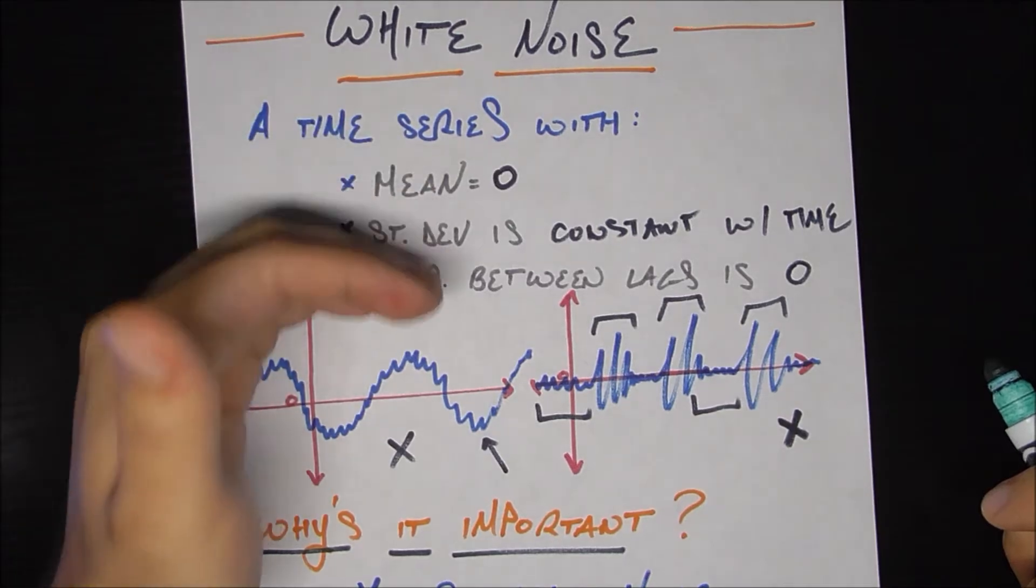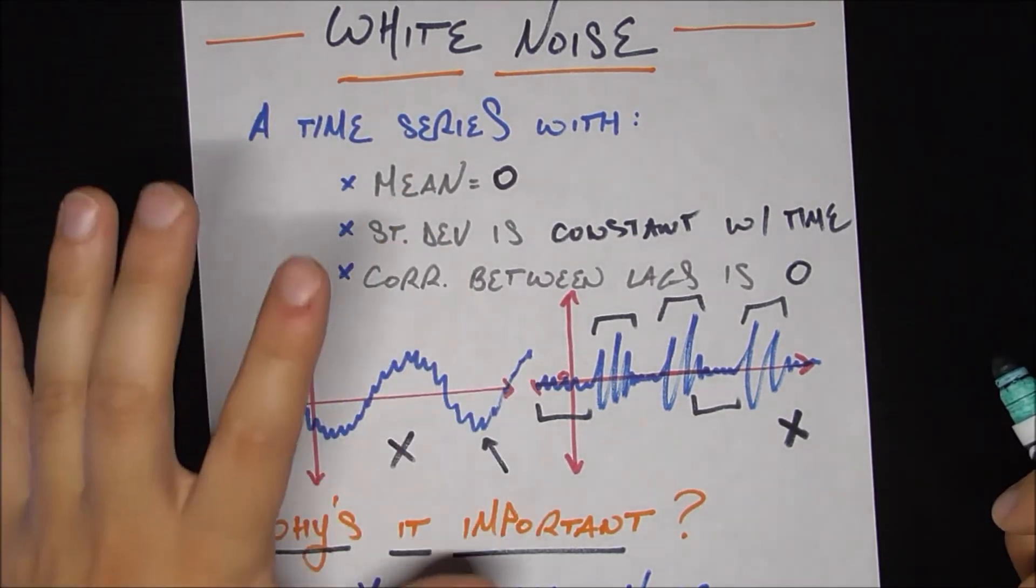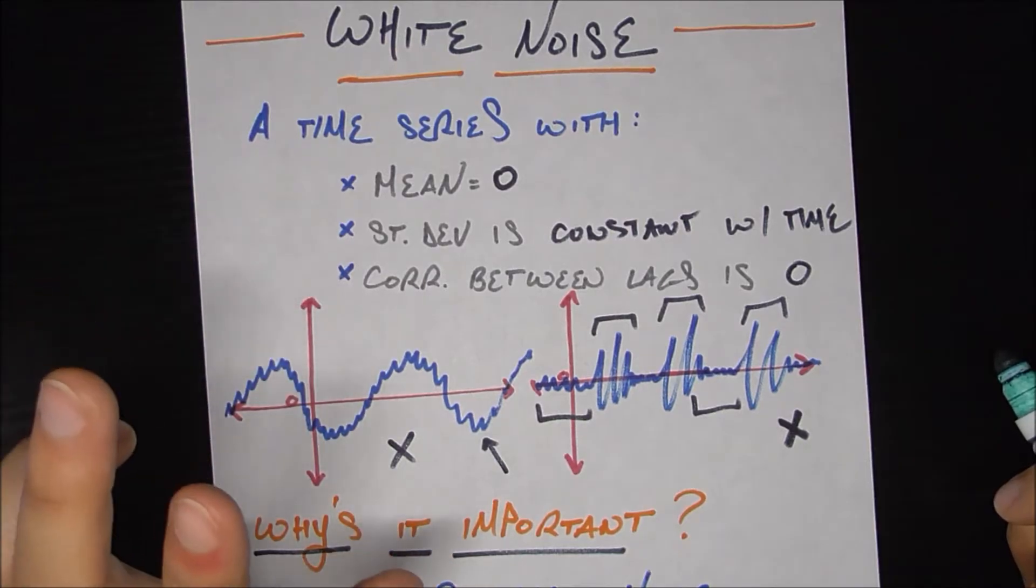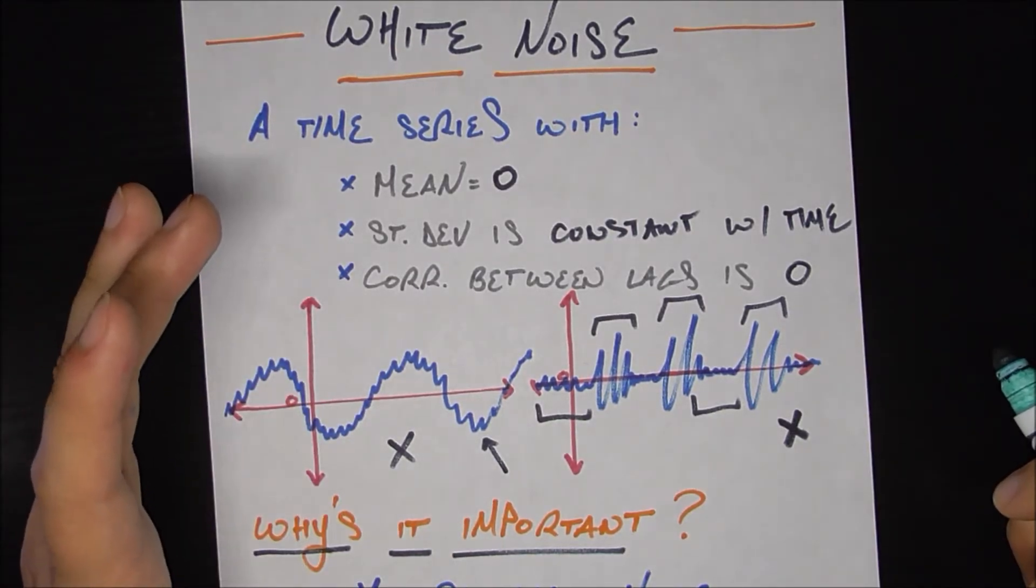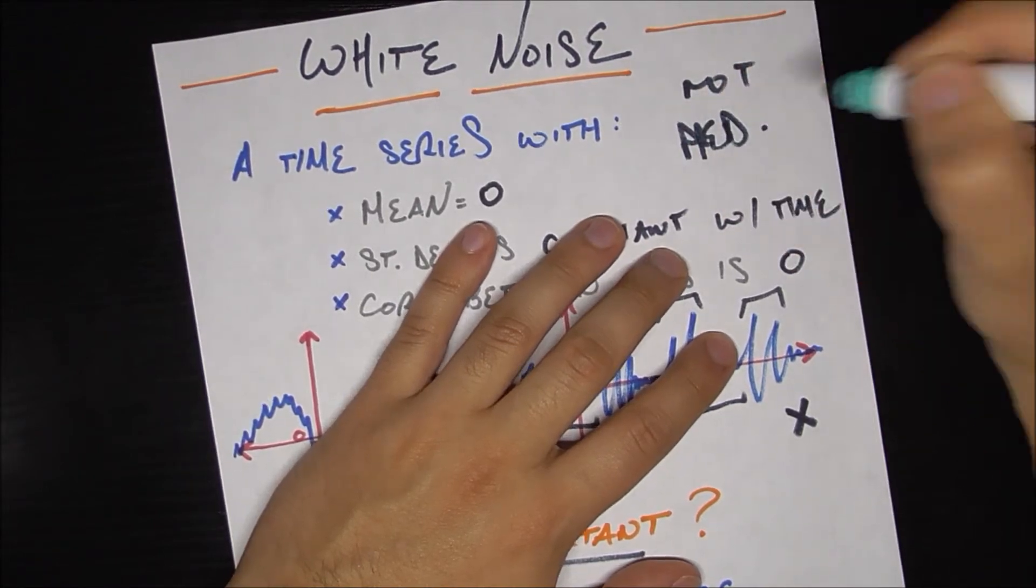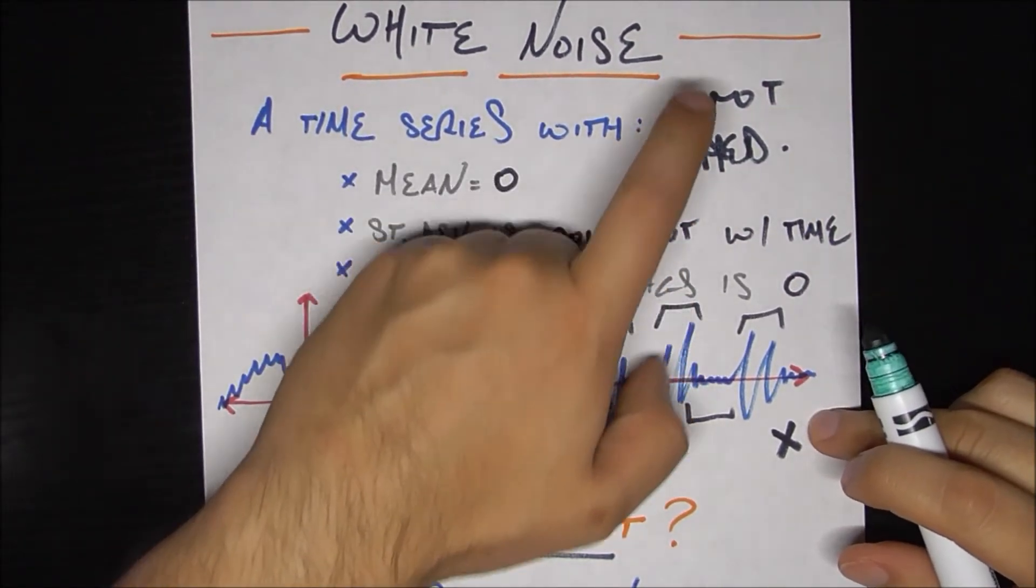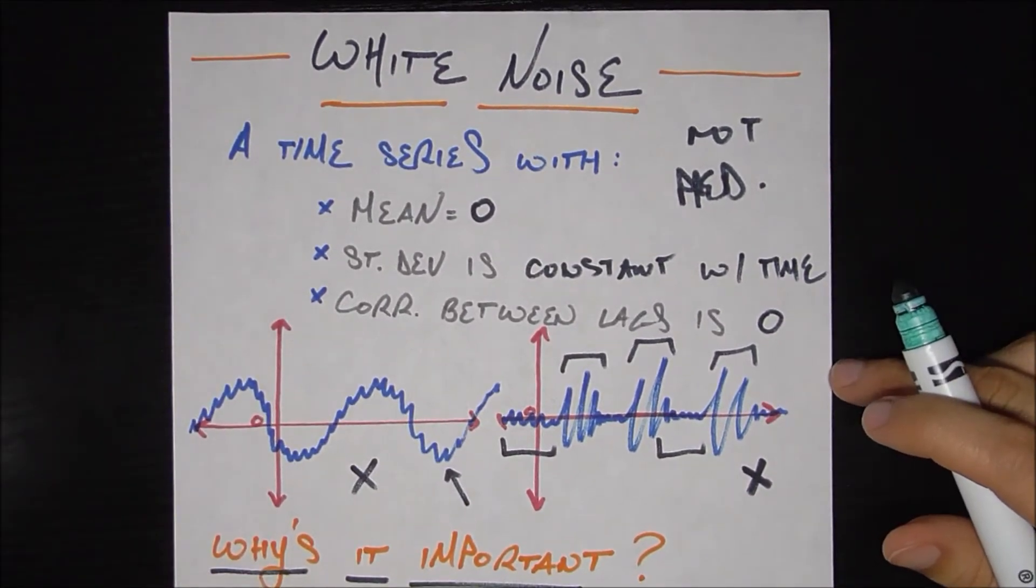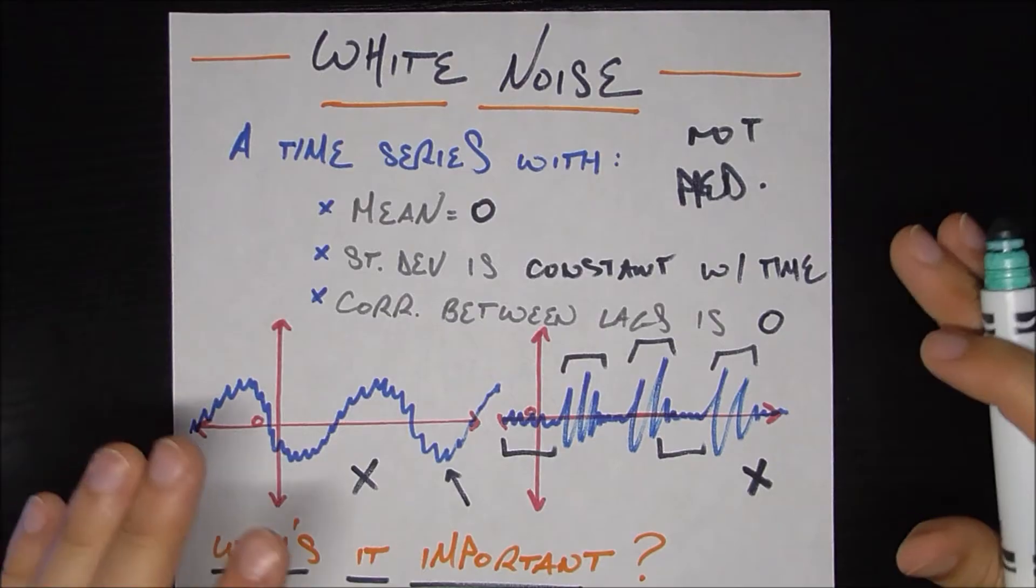So only if the three criteria are met here and it's truly white noise, then we cannot have done any better because one of the biggest properties of white noise is that it is not predictable. So if you have a time series that's white noise, just don't even bother trying to predict it because it's not predictable by definition.